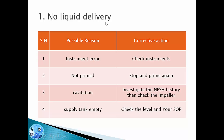The first problem is no liquid delivery. What could be the reason? The first reason could be an instrument error — our flow meter is giving misleading information and we need to recheck it. Maybe the pump is not primed, so we have to stop and prime again. Maybe cavitation is taking place and we need to investigate the causes. Maybe there is low net positive suction head delivered, and we need to check the impeller mechanically. Maybe the supply tank is empty — we should check the level physically, calibrate the related instrument, or review the standard operating procedure to ensure proper tank level before starting the pump.